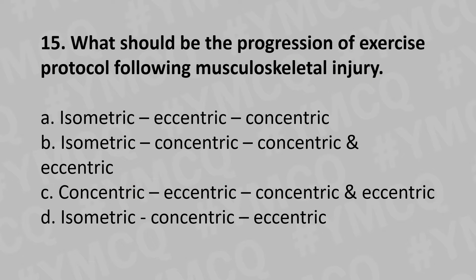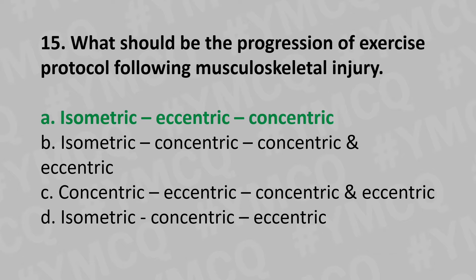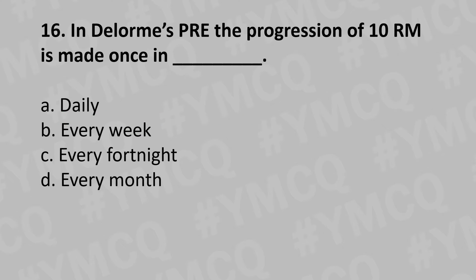Moving to our 15th question: what should be the progression of the exercise protocol following musculoskeletal injury? Option A: Isometric, eccentric, then concentric, Option B: Isometric, concentric, then eccentric, Option C: Concentric, eccentric, concentric, and eccentric, Option D: Isometric, concentric, and eccentric. And the answer is Option A: Isometric, then eccentric, then concentric.